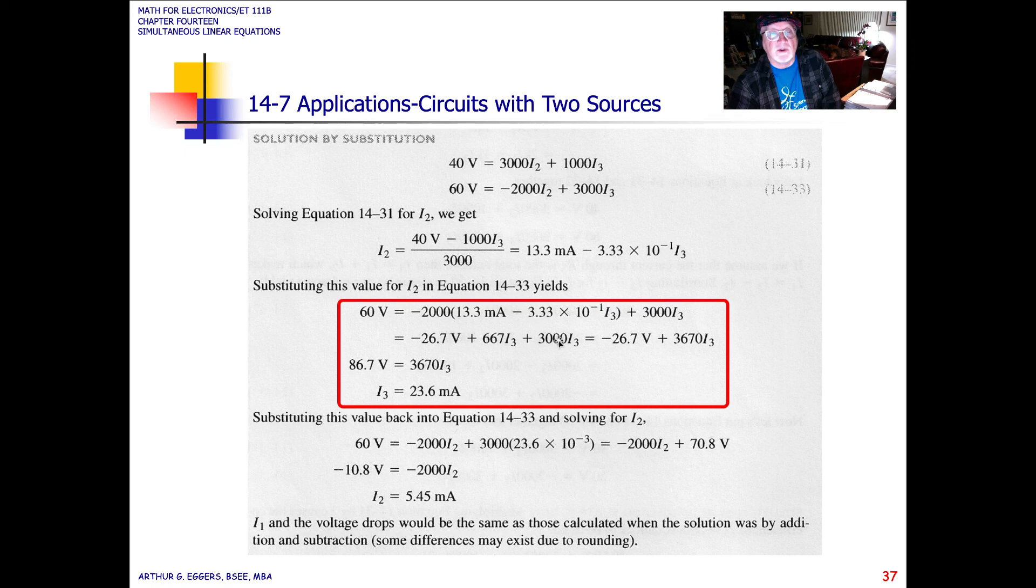Which gives us minus 26.7 plus 3670 I3 when we combine the terms. Continuing to solve for I3 then we end up with 87.7 volts equal to 3670 I3 or current 3 equal to 23.6 milliamps.